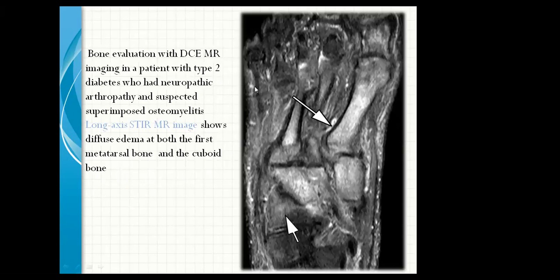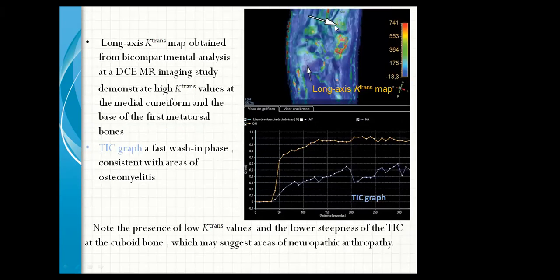Bone evaluation with dynamic contrast MRI imaging in a patient with type 2 diabetes who had neuropathic arthropathy with unsuspected superimposed osteomyelitis. Long-axis STIR MR imaging shows diffuse edema at both the first metatarsal and the cuboid bone. The Ktrans map obtained from biocompartmental analysis of the dynamic contrast imaging study demonstrates high Ktrans values at the medial cuneiform and at the base of the first metatarsal. The TIC graph shows fast wash-in consistent with the area of osteomyelitis, while the lower Ktrans value and lower steepness of TIC at the cuboid bone may suggest an area of neuropathic arthropathy.